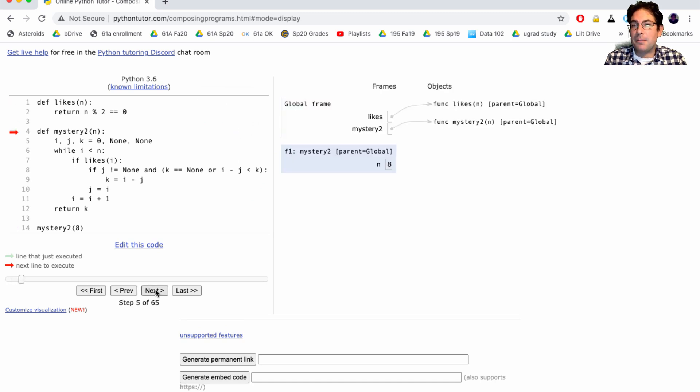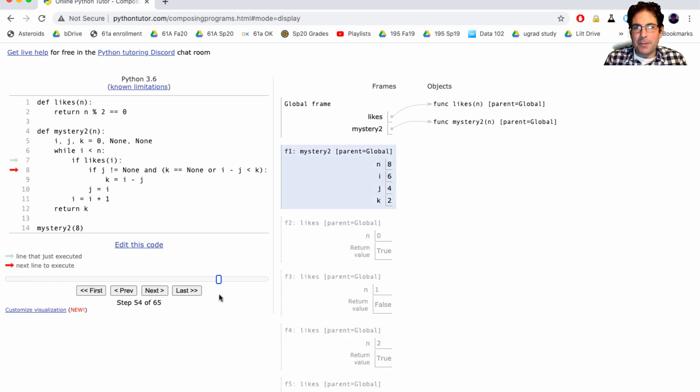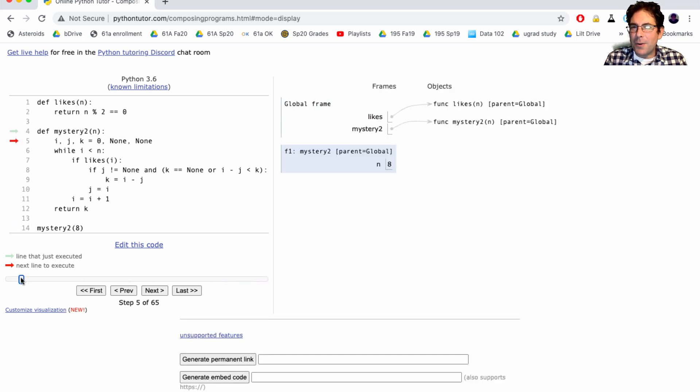And then we start evaluating. So we define these functions. We call mystery on eight. So n is eight and eight is never going to change. But i, j, and k are going to change. And as expected i is just going to go from zero, one, two, three, four, five, six, seven. Okay and then it'll be done.